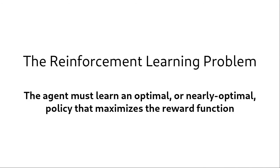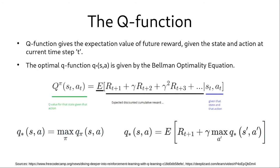This brings the question, how do we calculate the long term reward? And this is where the Q function comes in. The Q function gives the expectation value of future reward given the state and action at current time step t. We want to find the optimal Q function which gives the maximum expected reward. And that can be obtained by using the Bellman optimality equation as shown in the bottom right. Note that the optimal Q function is the Q function that gives the highest expected reward.